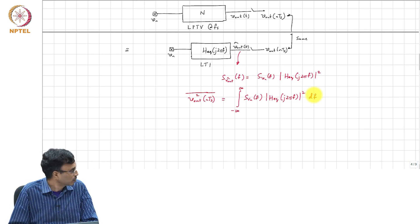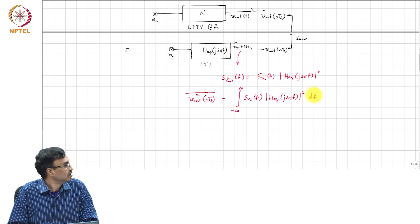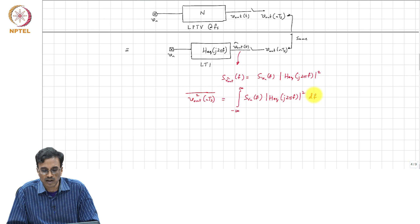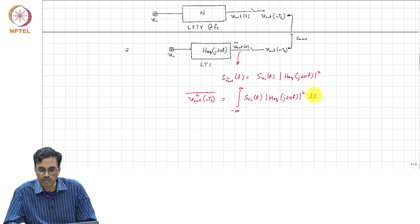Now, if you have multiple noise sources, what will you do? Well, I mean you find an equivalent time invariant transfer function from each noise source to the output and then repeat this calculation.